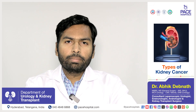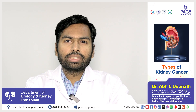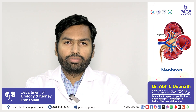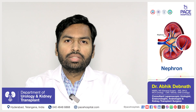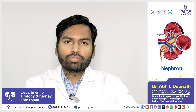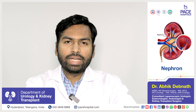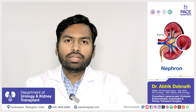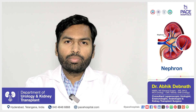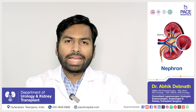One is the outer part of the kidney which consists of nephrons, the inner part of the kidney which consists of the collecting system, and the third part is the mesenchyme or the stromal part of the kidney.